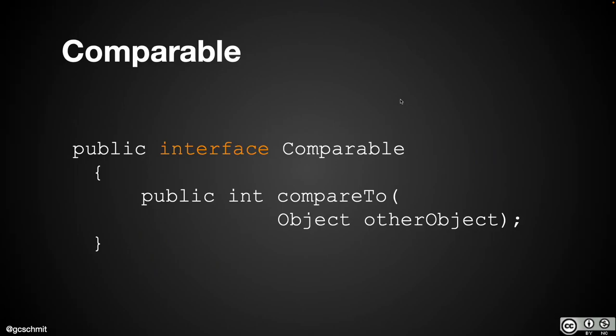The interface we're going to start with today is the Comparable interface. It's built into the Java standard library. It's super simple — it has exactly one method called compareTo. It takes a single parameter which is the object to which we're comparing this object, and it returns an integer value that is either less than zero, greater than zero, or equal to zero.